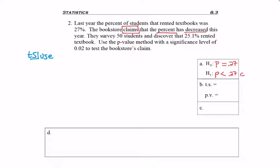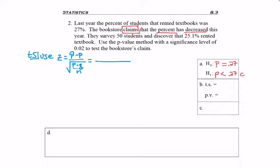I'm ready to find my test statistic and figure out which formula to use. Since I'm testing a claim about a proportion, I need to use the proportion test statistic formula, which is p-hat minus p, divided by the square root of p times q divided by n. Now I need to find the parts. The first piece I need is p-hat — sometimes we have to find it, sometimes p-hat is given.